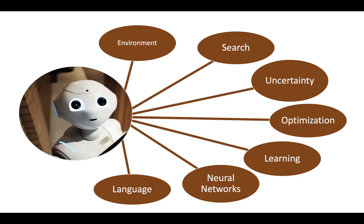You can think of it as a good starting point — a field that can be divided into the following seven categories: Environment, Search, Uncertainty, Optimization, Learning, Neural Networks, and Language.